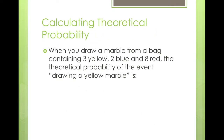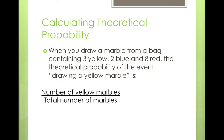When you draw a marble from a bag containing three yellow, two blue, and eight red marbles, the theoretical probability of drawing a yellow marble is three over thirteen — three yellows out of a total of thirteen marbles. So the probability of picking a yellow over the total number of marbles is 3/13, and this is an example of theoretical probability.